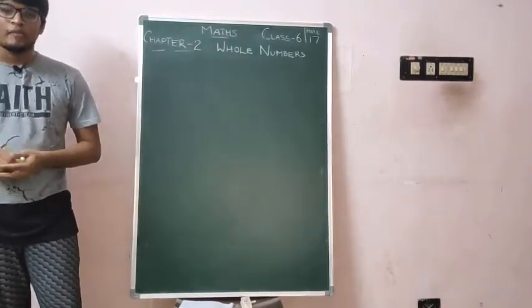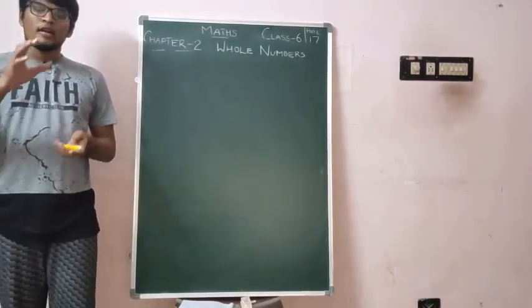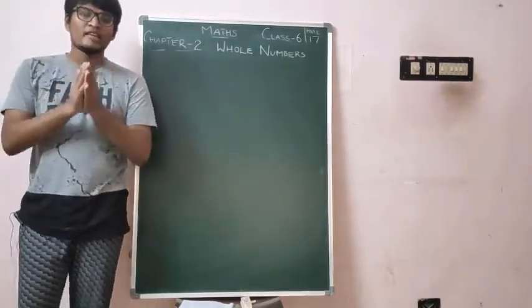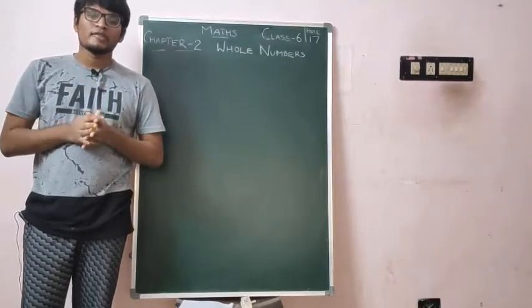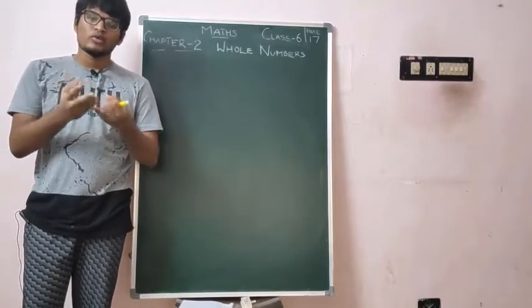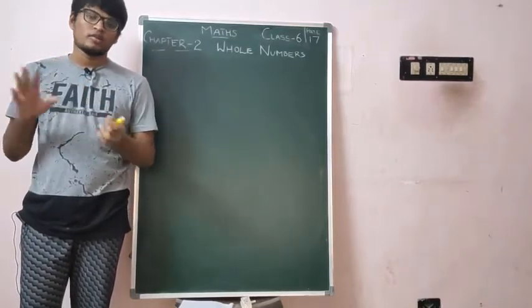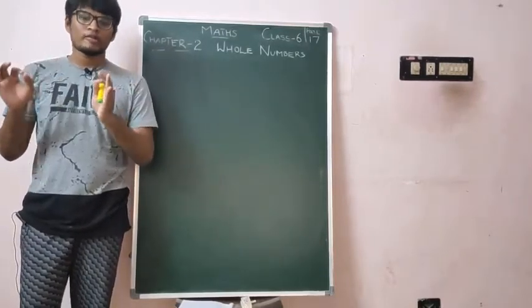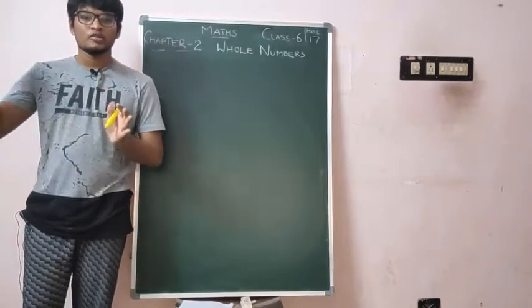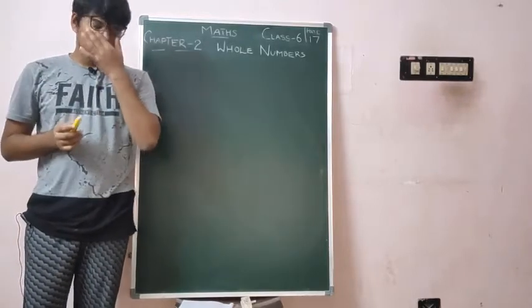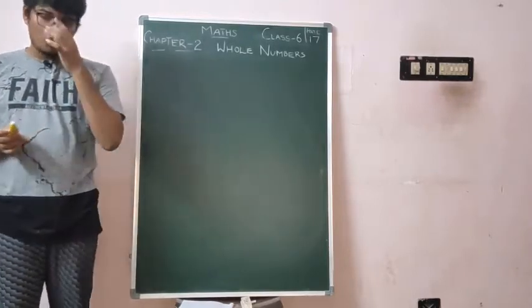You already know numbers, right? Daily usage numbers: 0, 1, 2, 3, and so on. Normal numbers — 0, 1, 2, 3, so on. These are all called whole numbers.